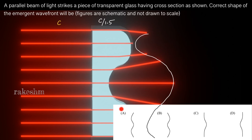These were the four options given, and out of these four options, option A most resembles the wavefront we drew. He has mentioned that the figures are schematic and not drawn to scale, so the most suitable option is option A.